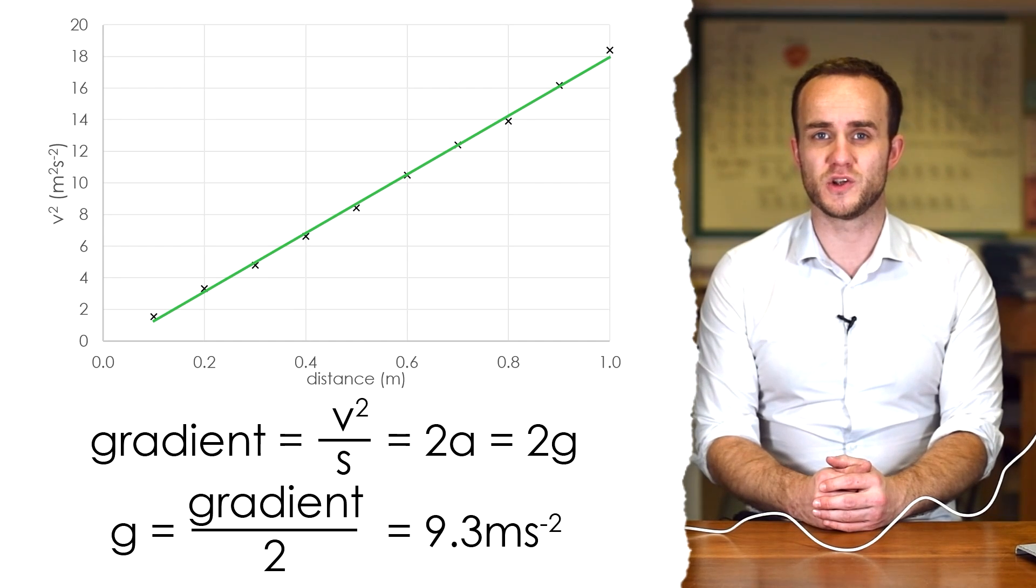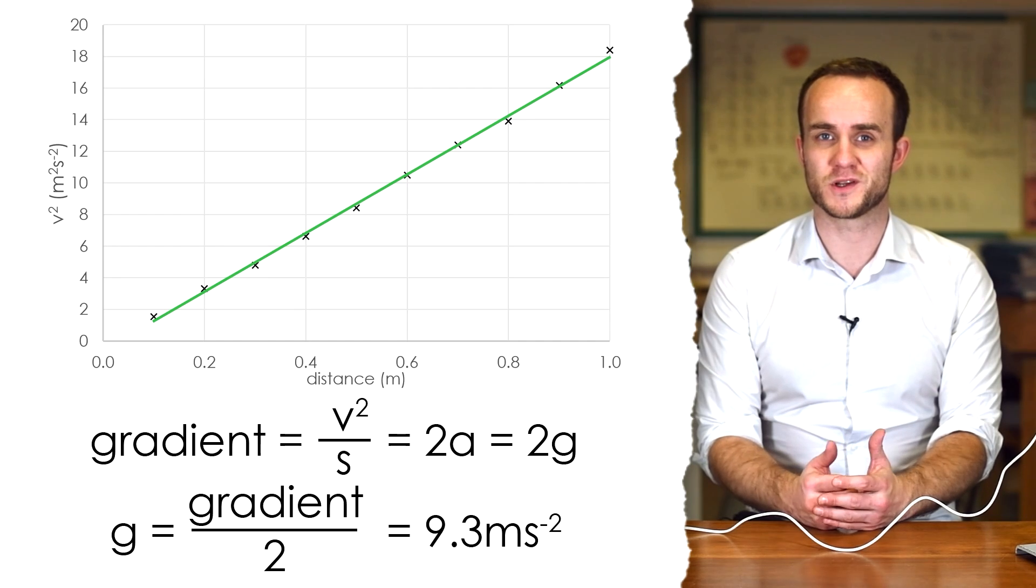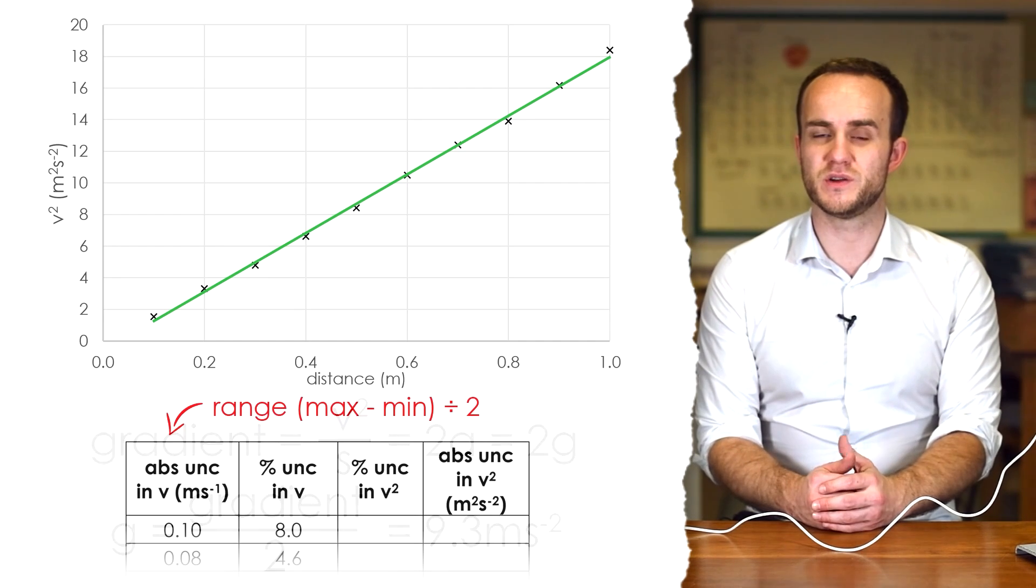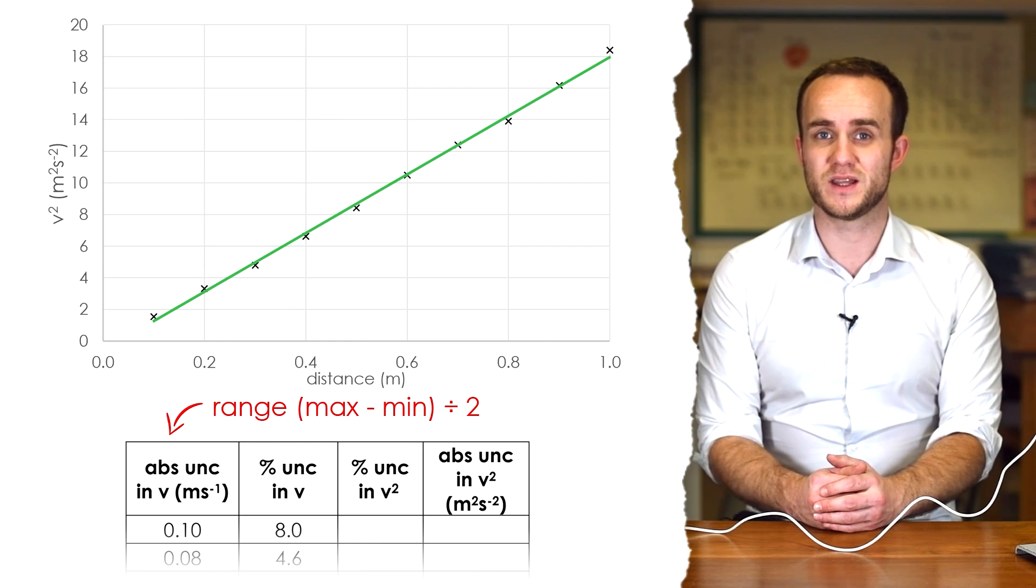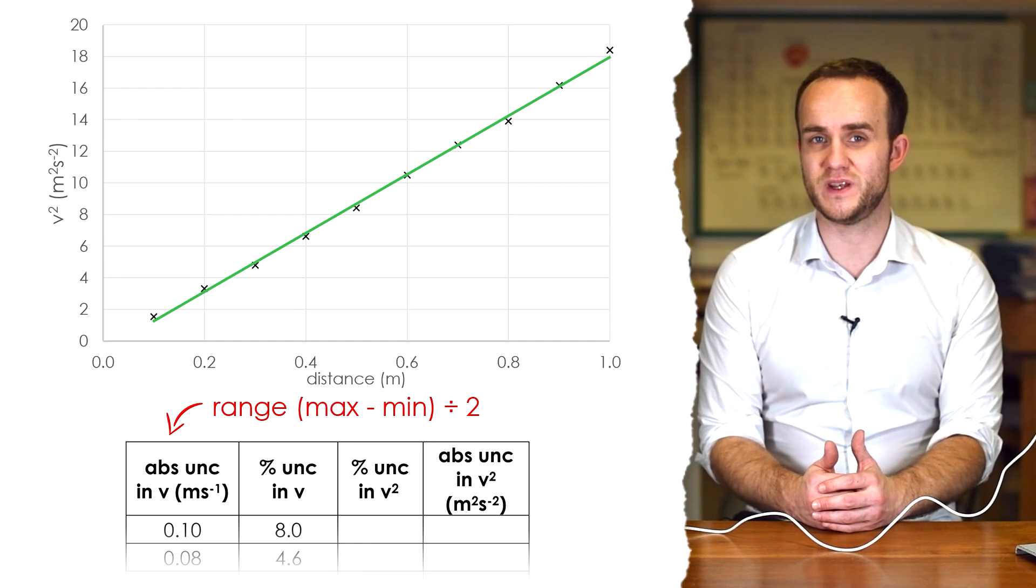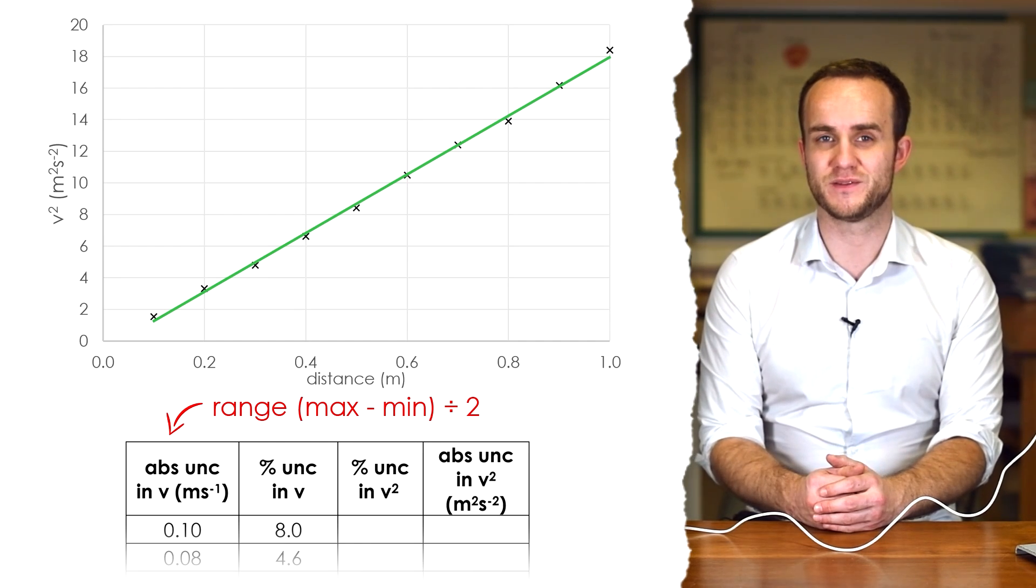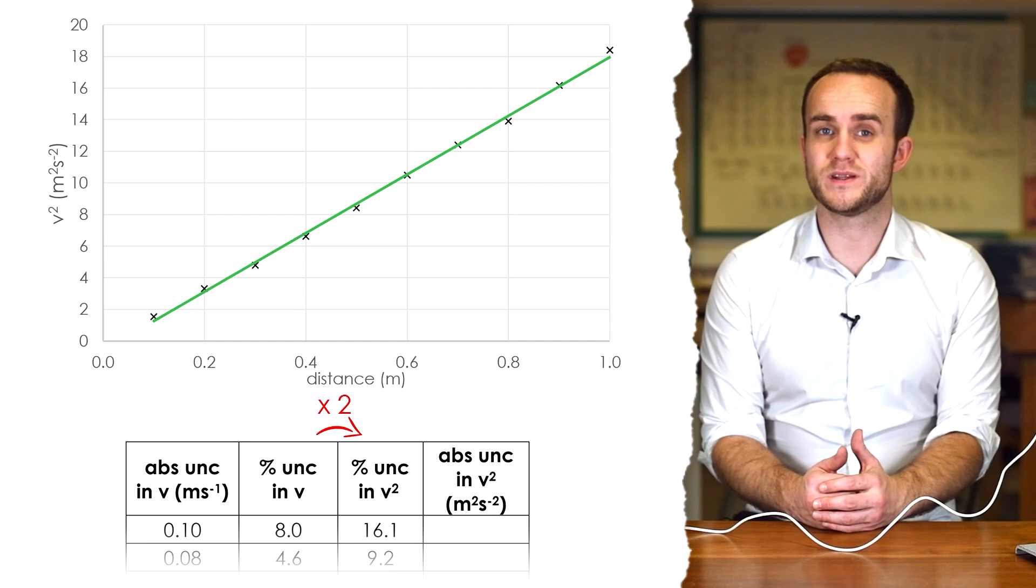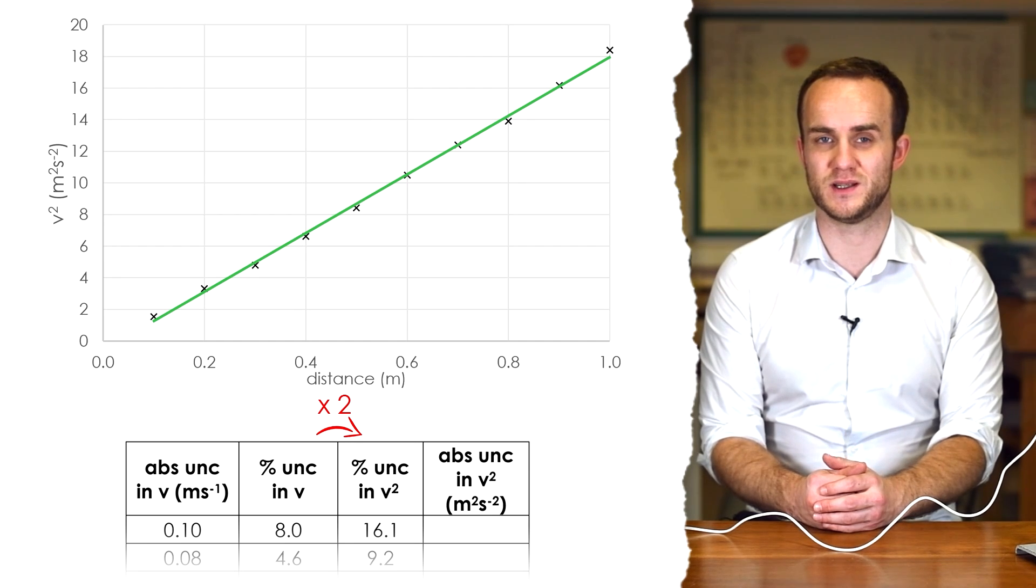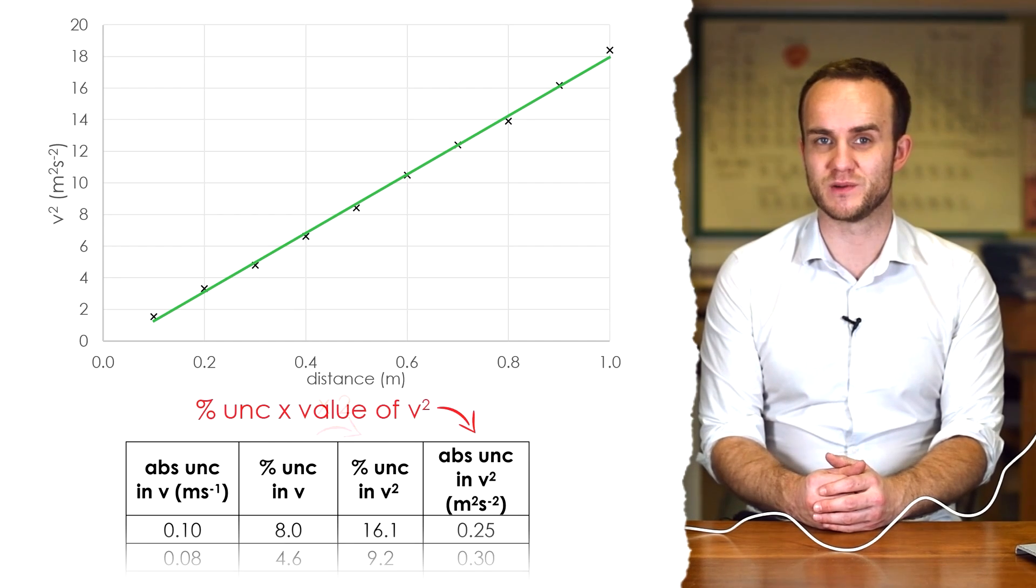This experiment is a good opportunity to flex your muscles regarding uncertainties. What you should do is find the range of your velocities for each distance and then half that. That's going to be your uncertainty in your average speed. But because we're going to V², we therefore have to find the percentage uncertainty in each average speed. To then go to V² we double this percentage uncertainty and then we can turn that back into an absolute uncertainty.